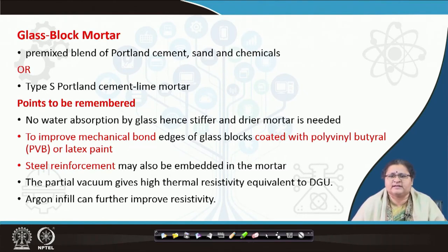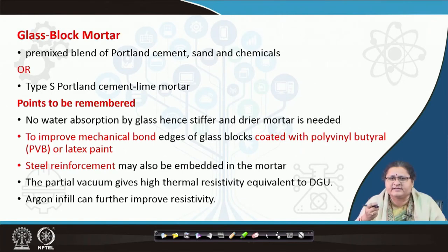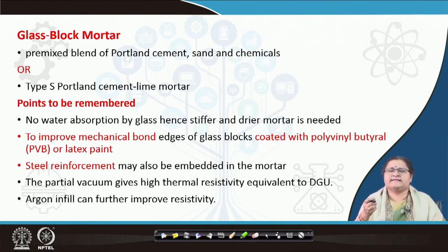We can improve the mechanical bondage between the glass wall and the adjacent wall by coating with PVB or latex paint. Steel reinforcements may be pushed into and embedded in the mortar to make it stronger. These glass blocks, if you recollect from the previous lecture, have partial vacuums inside — it is air inside, partially. So these are very much equivalent to the double glazing unit.